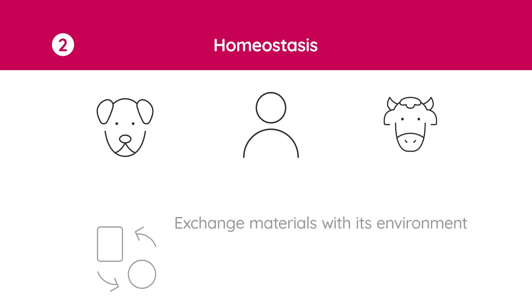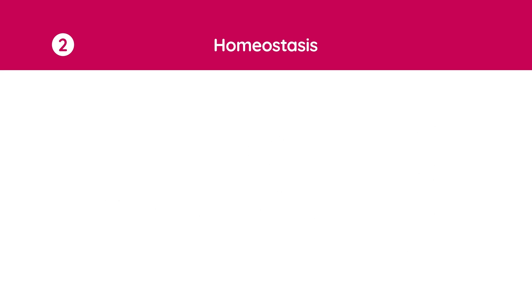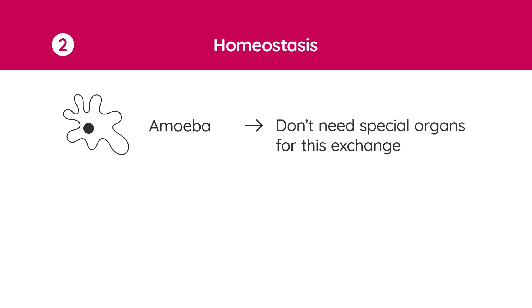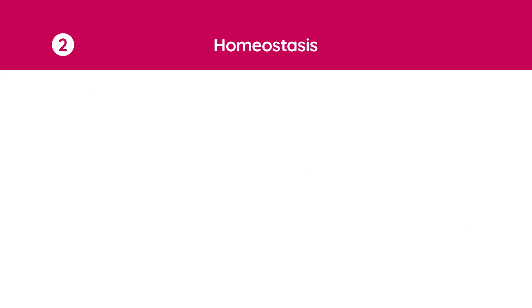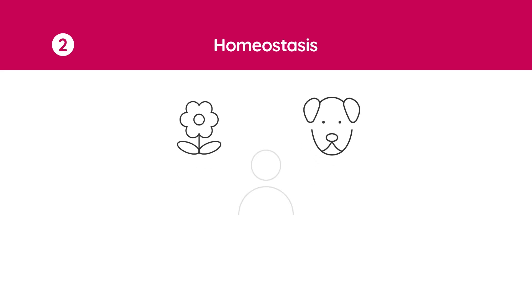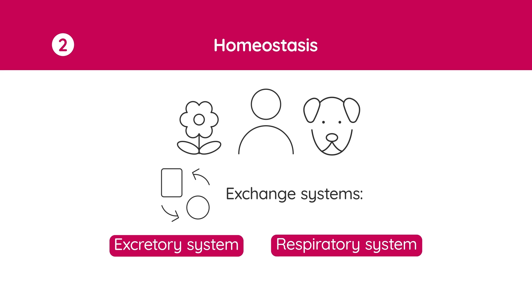Homeostasis requires an organism to exchange materials with its environment. Small single-cell organisms like amoeba don't need special organs for this exchange — small cells have a large surface area so the material to be exchanged can move in and out of the cell by diffusion. Larger multicellular organisms like plants and animals have to use exchange systems like excretory and respiratory systems to allow materials to be exchanged between the organism and its environment.